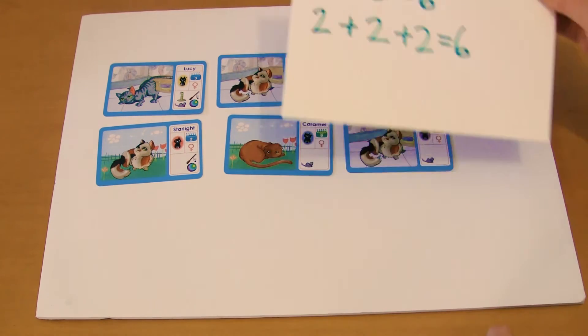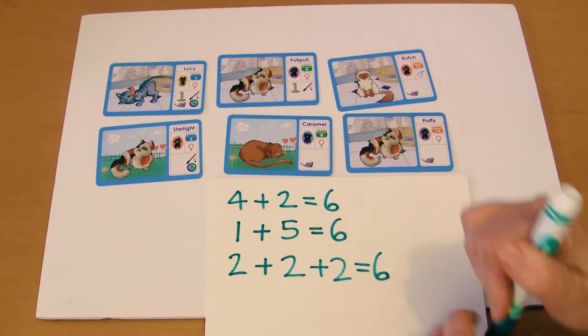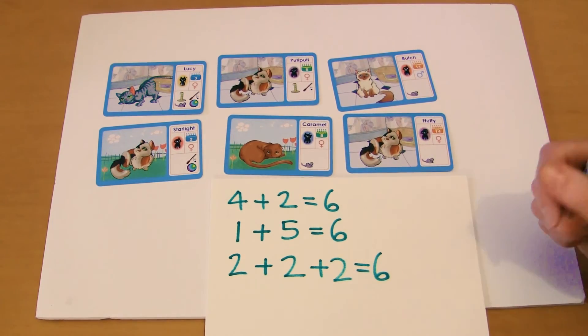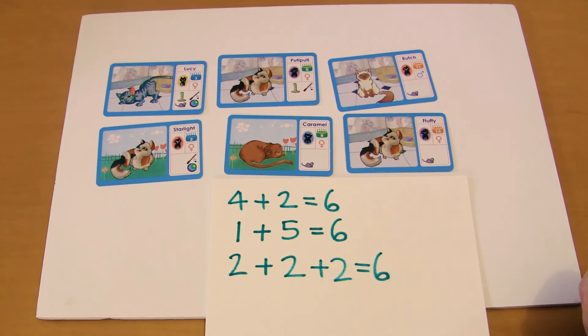And we know that that also equals six because that's how many cakes we have. So it's teaching that there are multiple ways to get the same answer by arranging the same cards. So they're staying the same number, but there's just different ways of doing it depending on how you classify them.